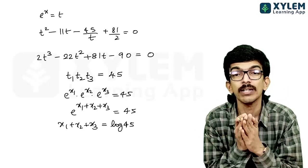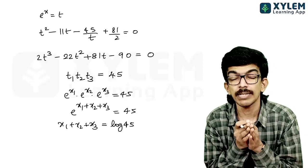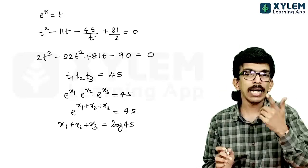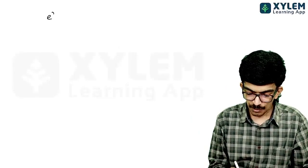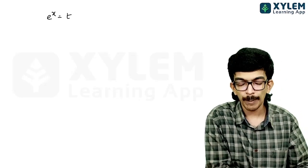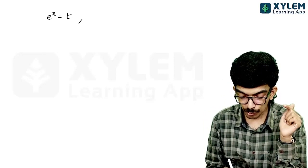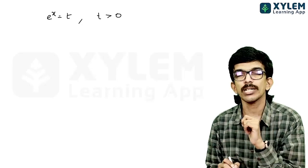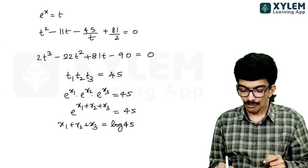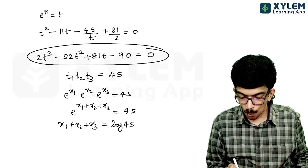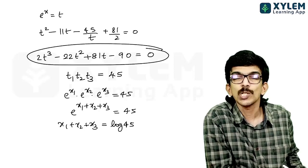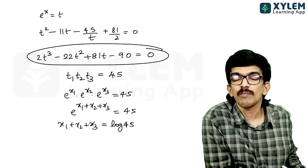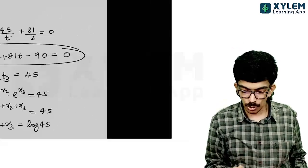That answer of 45 is what NTA gave, and every single coaching center has given the same answer — but there is a serious mistake. When we substitute e^x = t, we must always note that t must be greater than zero. As long as x is a real number, t must be positive. We are not checking whether t is positive or not.